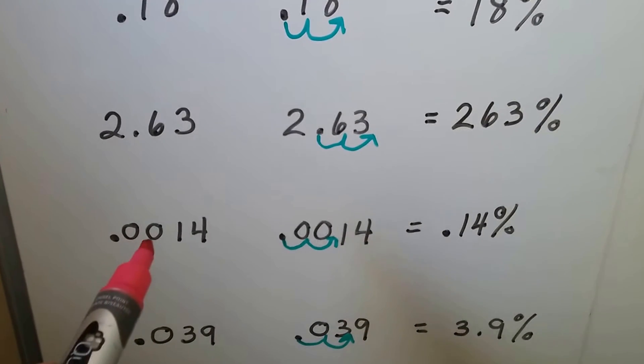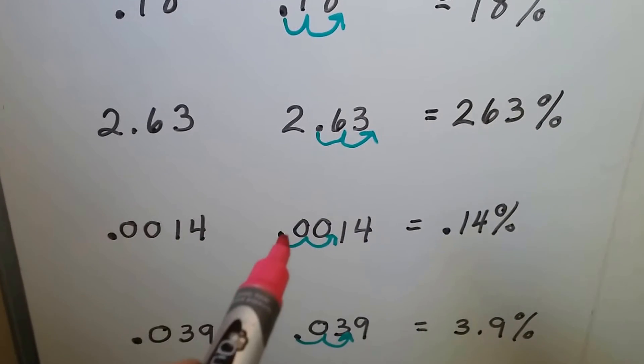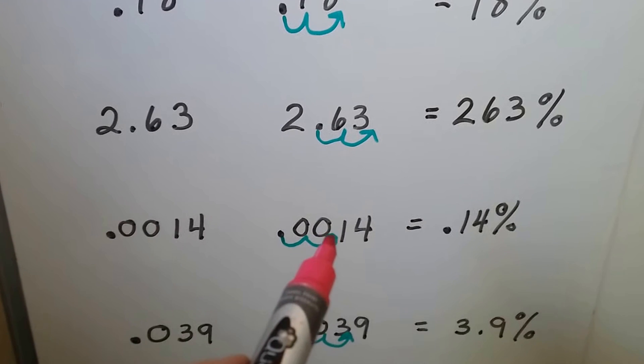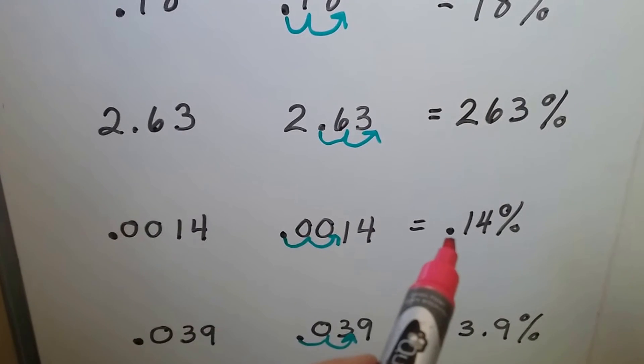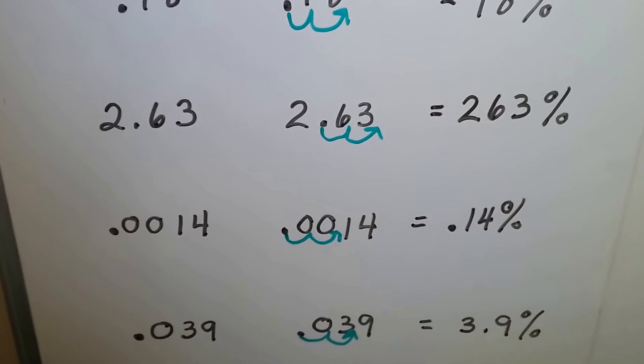If we have .0014, we move it over two hops. It goes in between the zero and the one. We keep it there as .14 percent.